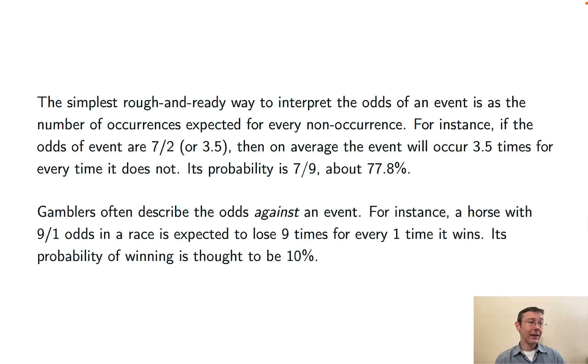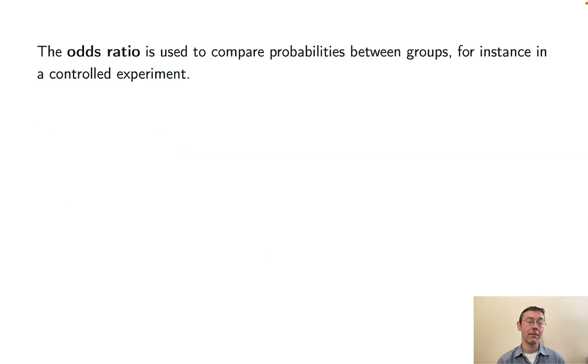Gamblers often describe the odds of an event not happening, the odds against an event. For instance, if you see that a horse has 9 to 1 odds, or 9 odds in a race, it's expected to lose 9 times for every one time it wins. Its probability of losing is thought to be 90%, its probability of winning is thought to be 10%.